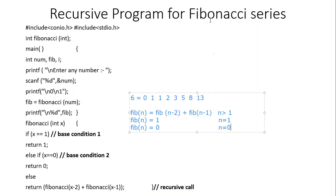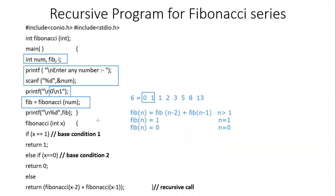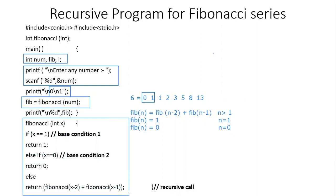The program is straightforward — just substitute the mathematical model. In the main function, three variables are declared. We take input for the number num for which the series is generated. Since 0 and 1 are the first two automatic entries, we print them directly. Then we call: fib = Fibonacci(num). The definition of the Fibonacci function is given. It is very simple — just look at the mathematical model.